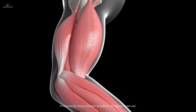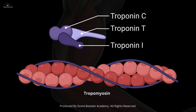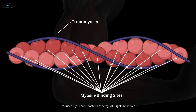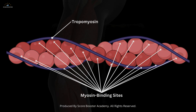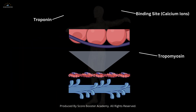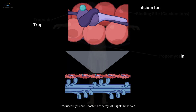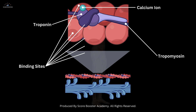In addition to actin and myosin, other proteins like troponin and tropomyosin regulate the interaction between these filaments. Tropomyosin is a long, fibrous protein that wraps around actin, blocking the myosin binding sites. Troponin, attached to tropomyosin, has a binding site for calcium ions. The binding of calcium to troponin triggers conformational changes that move tropomyosin away from the binding sites, allowing myosin to interact with actin.